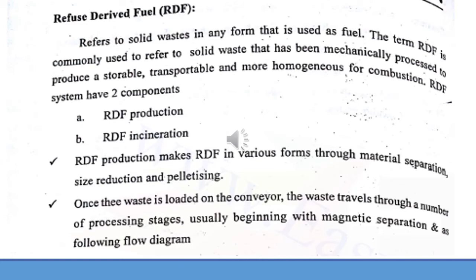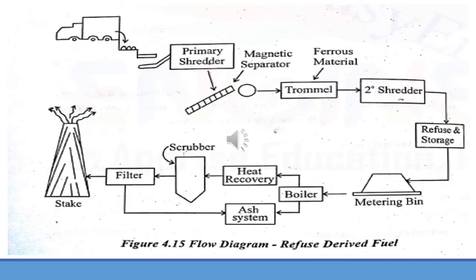Refuse Derived Fuel (RDF) has two components: RDF production and RDF incineration. In RDF production, fuel is produced in various forms through material separation, size reduction, and pelletization. For RDF incineration, a truck dumps all waste into a primary shredder which reduces the size of the waste materials. The waste then moves into a magnetic separator to remove ferrous materials. Again these materials are shredded to the required sizes and move into a boiler where heat is generated, converting waste into ash and heat, which is then used for other purposes.